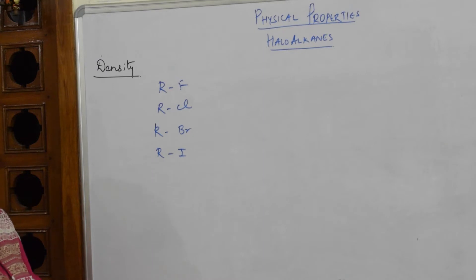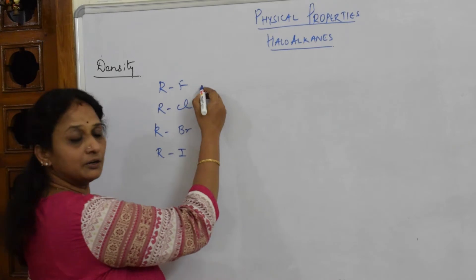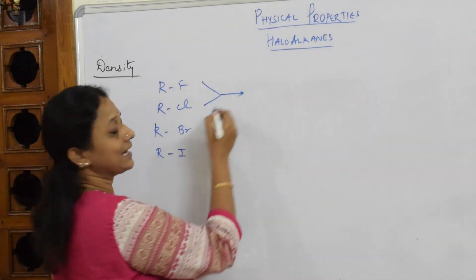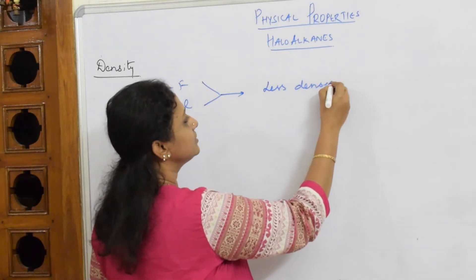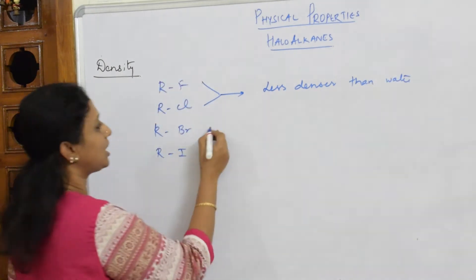In these compounds, remember: the first and second, R-F and R-Cl, are less dense than water. Your R-Br and R-I are heavier than water.